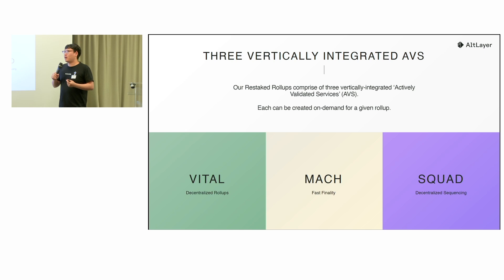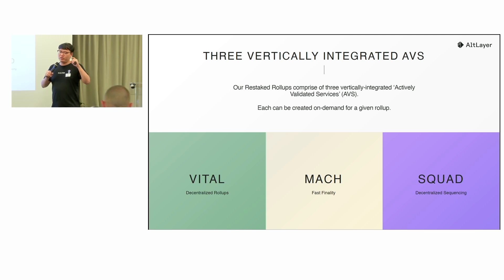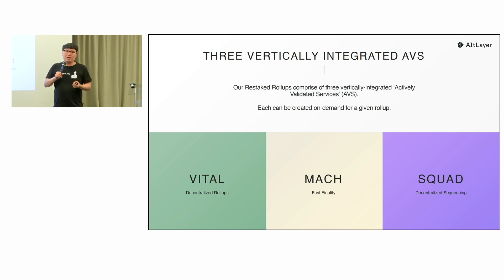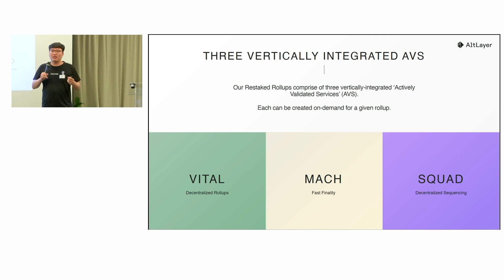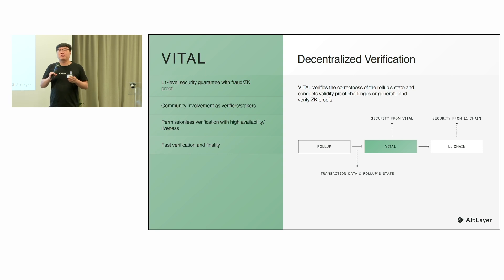Right now we have three different AVS for each rollup. We use VATL to address sequencing problems, and we leverage MAC on top of VATL to provide fast finality. Beyond that, since a single sequencer is not the ideal case, we have Squad to provide decentralized sequencing.